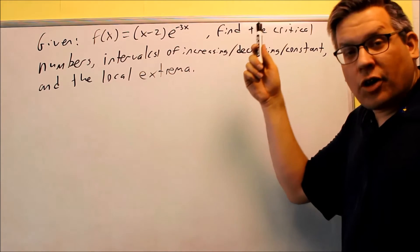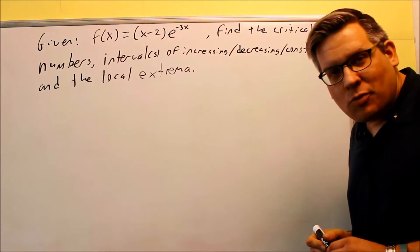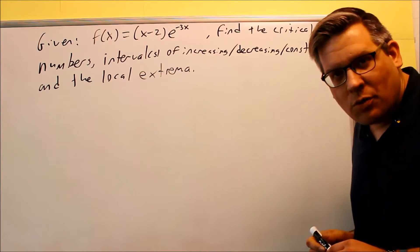So the first thing you want to do is find your critical numbers. We've got to take the derivative of this. And what we notice right away is that's two pieces multiplied together, which requires us to use the product rule.